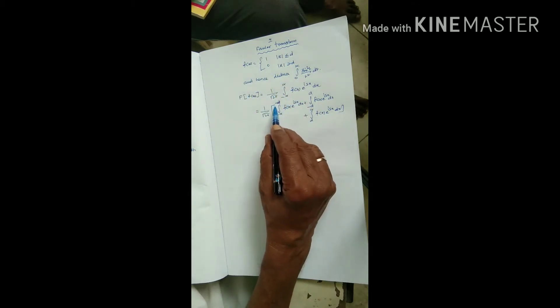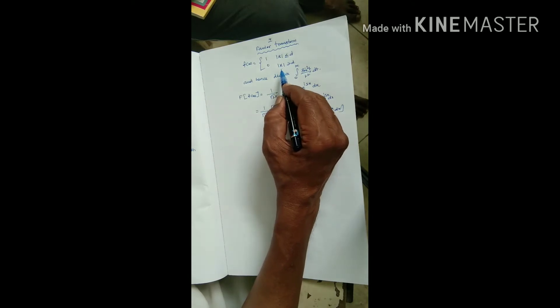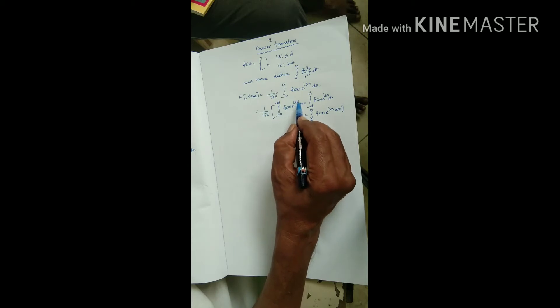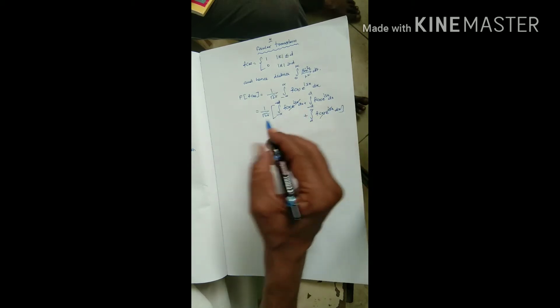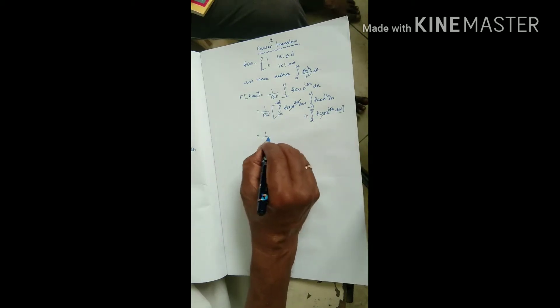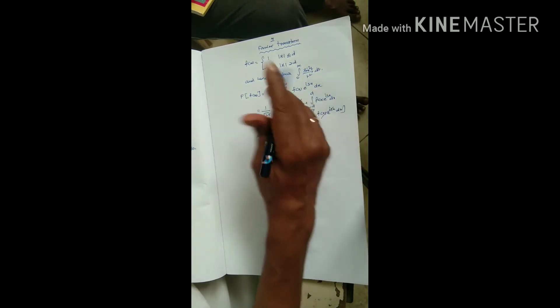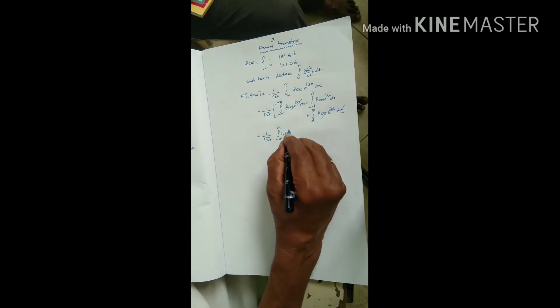Since f of x equals 0 outside the interval, the first and third integrals are 0. We have 1 by root 2 pi integral minus d to plus d, f of x is 1, so 1 times e power is x dx.